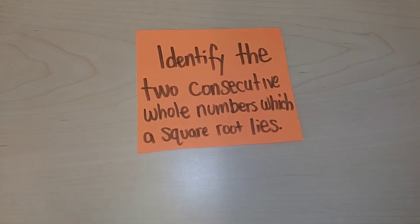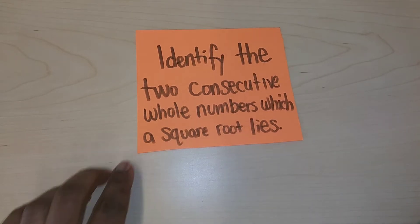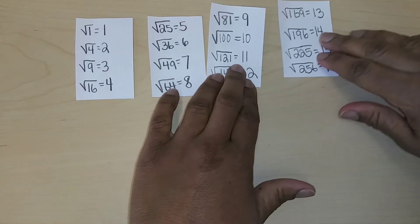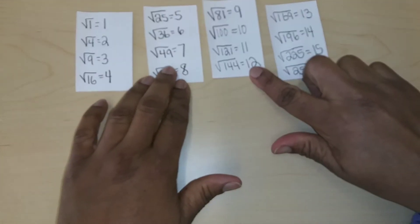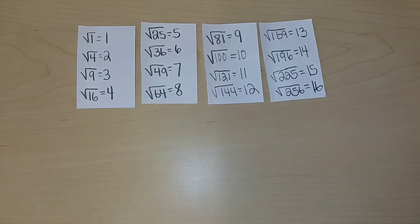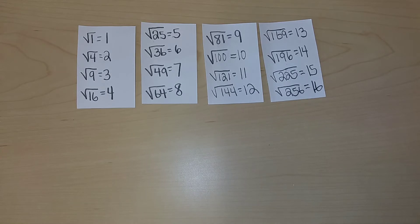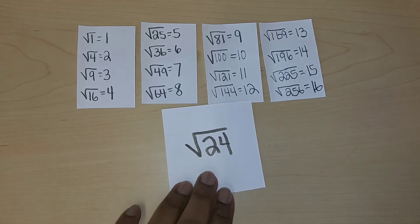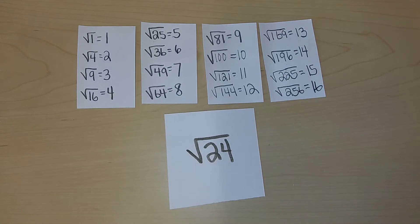In this video we will be continuing to identify the two consecutive whole numbers which a square root lies between. I already prepped and prepared the square roots that we are familiar with so we could easily reference. In order to identify which two consecutive perfect squares a square root lies between, we have to first be familiar with perfect squares and square roots.